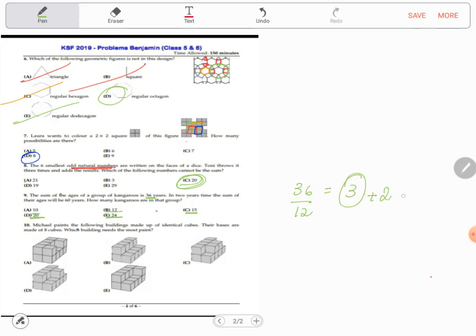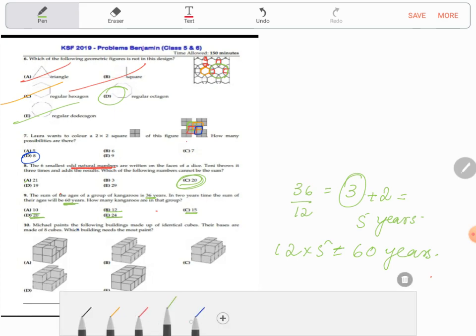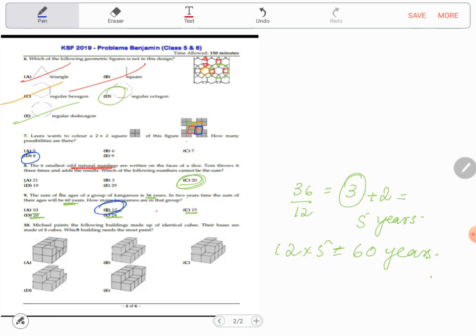We need to check our answers. Give three. If each kangaroo is three years old, after two years it will be five years. If there are 12 kangaroos, 12 times 5 will give you 60 years. That's your answer, 60 years. So the answer to this question is B.